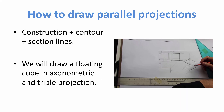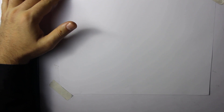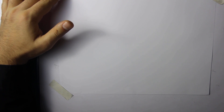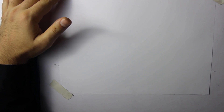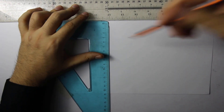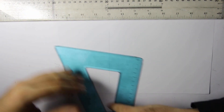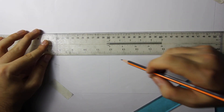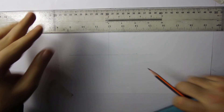So let's see how to draw parallel projection — first construction and contour lines, then we'll thicken the important lines. Let's draw a cube in triple projection starting now. How does a cube look in triple projection and axonometric along with cast shadows? Do the triple projection: a 4cm cube, just anywhere.